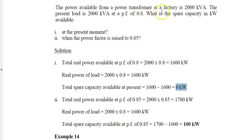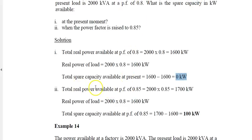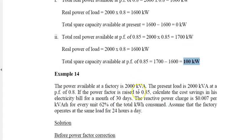However, the total real power available at the improved power factor of 0.85 is 2000 times 0.85, which equals 1700 kW. But the current real power only needs 1600, so the spare capacity is 100 kW. This is the benefit of improving the power factor to 0.85.